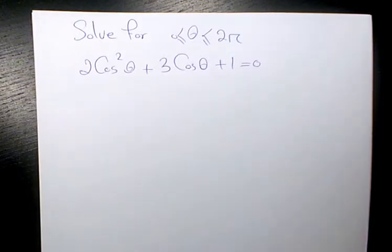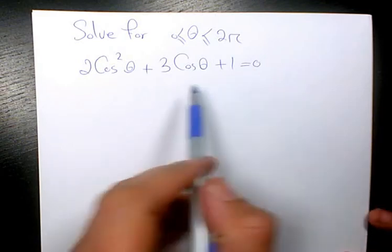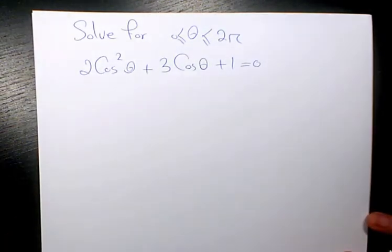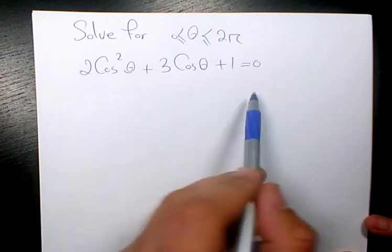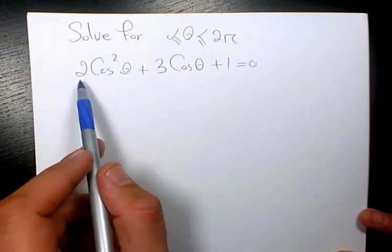And we need to have theta between 0 and 2 pi. First thing I need to solve this quadratic equation by factoring, because that's the easiest for this kind of equations. So I'm going to use AC method.